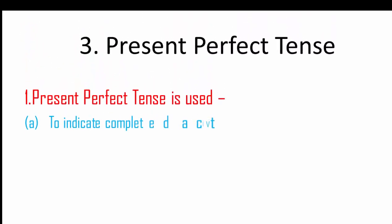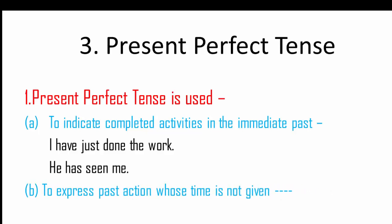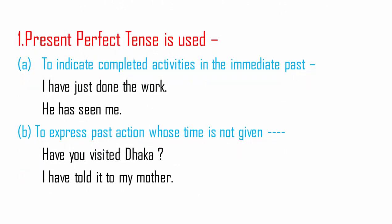Next, present perfect tense. Present perfect tense is used: A, to indicate completed activities in the immediate past. For example: 'I have just done the work.' 'He has seen me.' B, to express a past action whose time is not given. For example: 'Have you visited Dhaka?' 'I have told it to my mother.' This is the example of present perfect tense.